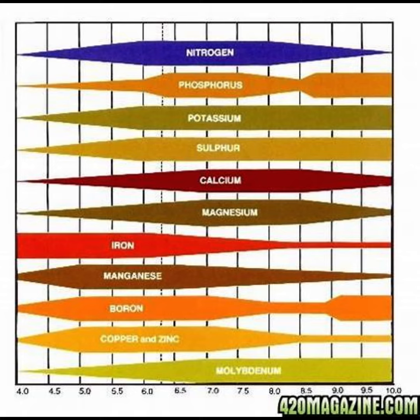Nutrient Availability: Soil pH influences the availability of nutrients to plants. Different nutrients have varying solubility at different pH levels. For example, essential nutrients like phosphorus, potassium, and most micronutrients are more available to plants in slightly acidic-to-neutral soils — pH 6 to 7. Outside this range, certain nutrients may become less accessible to plants.